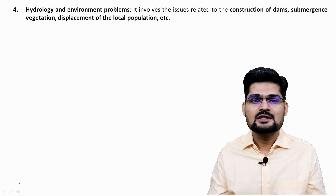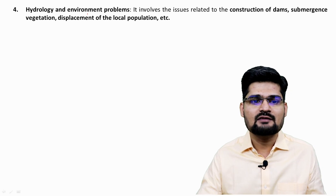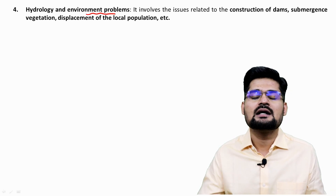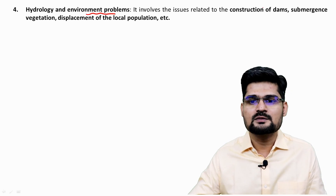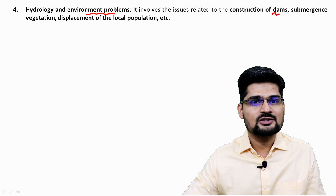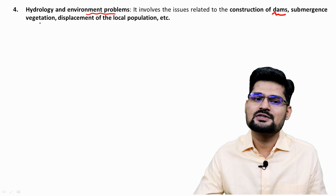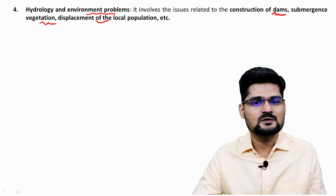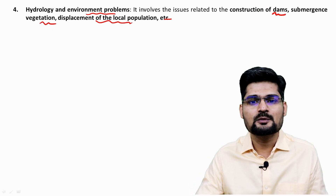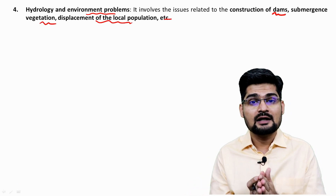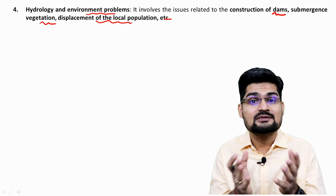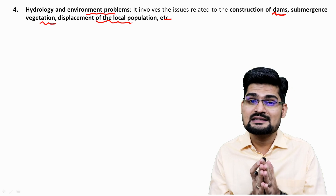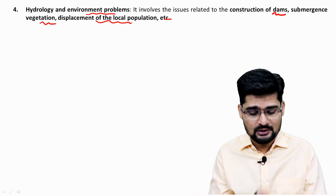In hydrology, construction of dams causes submergence of vegetation, displacement of local populations, and many times flash floods due to construction activities. This is a very important challenge in regional planning.